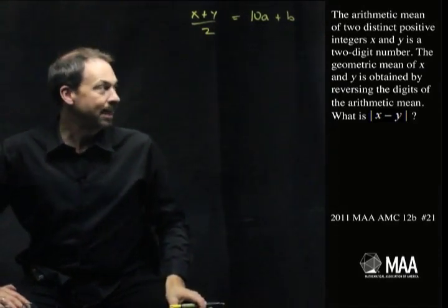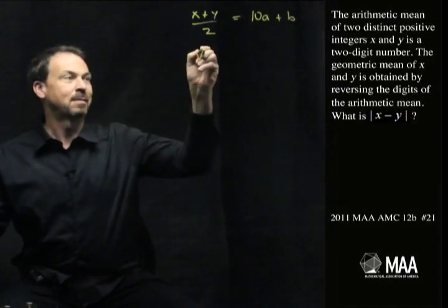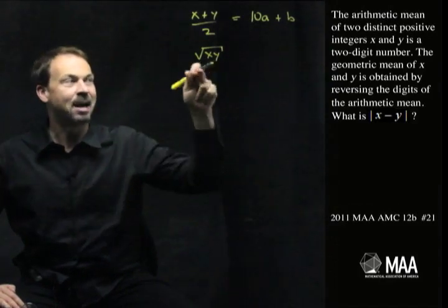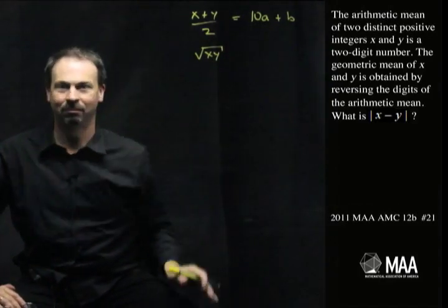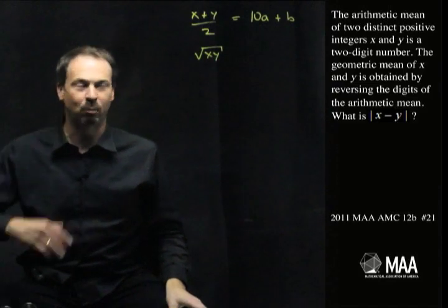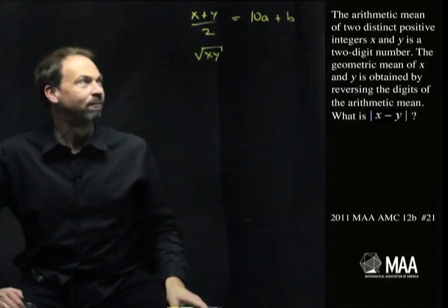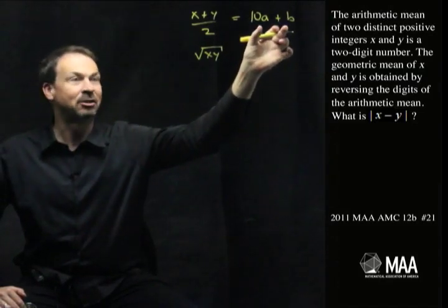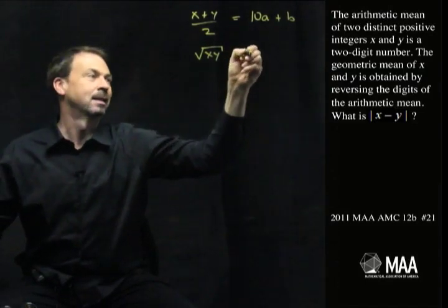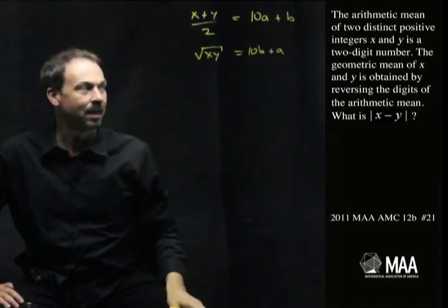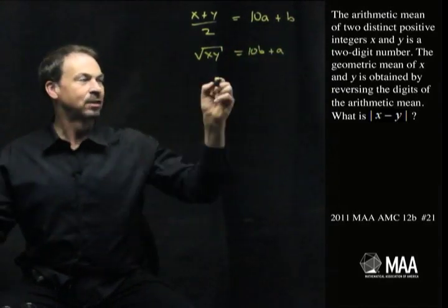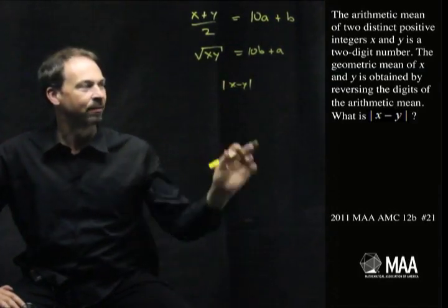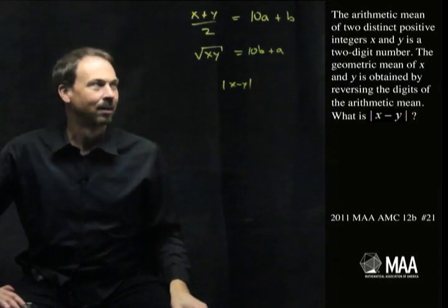The geometric mean of x and y is the square root of the product of the two numbers. That's the side length of a square with the same area as the rectangle of dimensions x by y. That's the Greek way of thinking of geometric mean. We're told that equals the reverse of the two-digit number, so it must be 10b plus a. And then we're asked for the absolute value of the difference of the two terms.